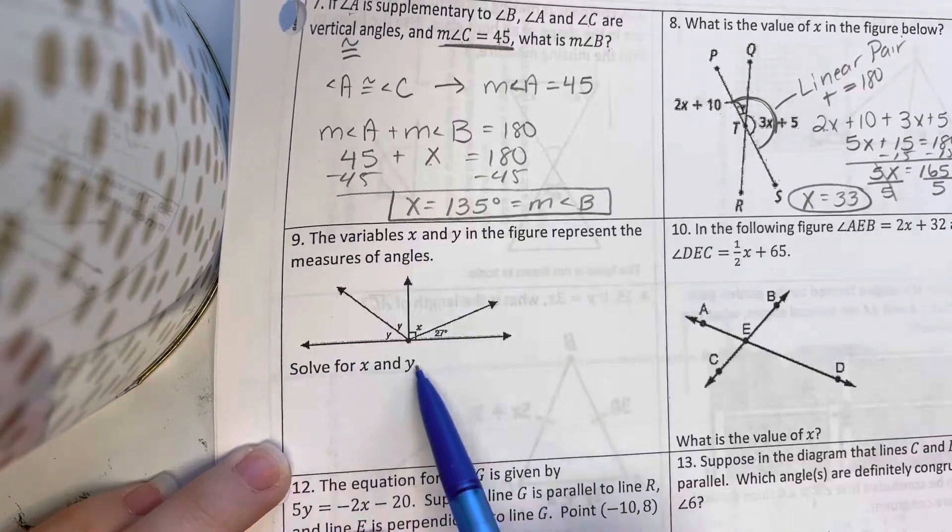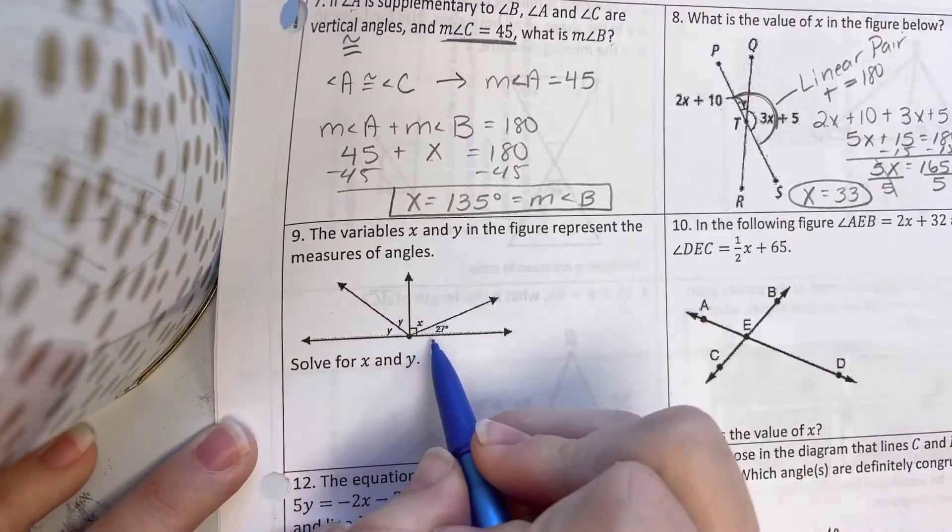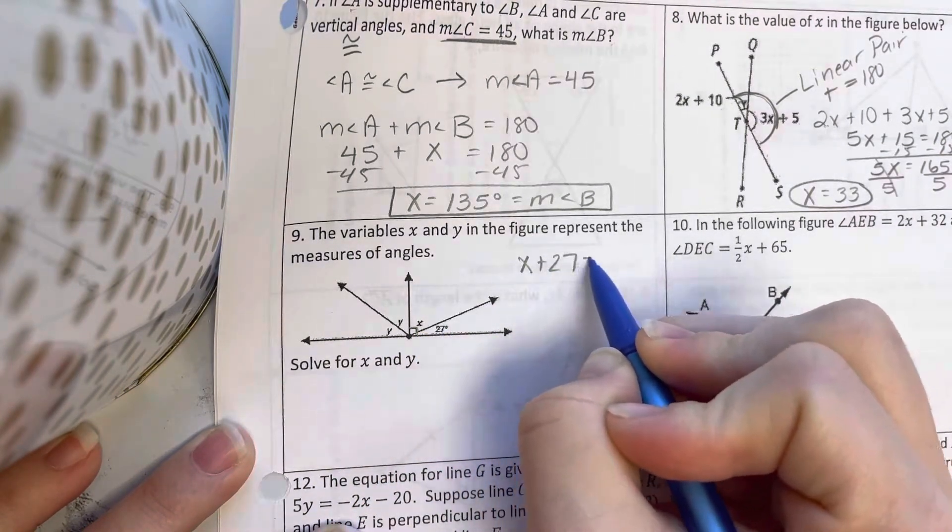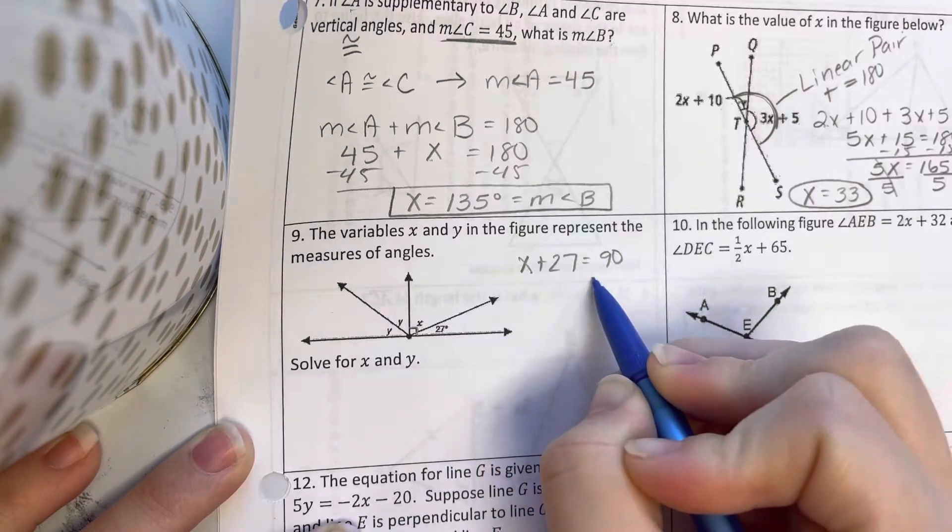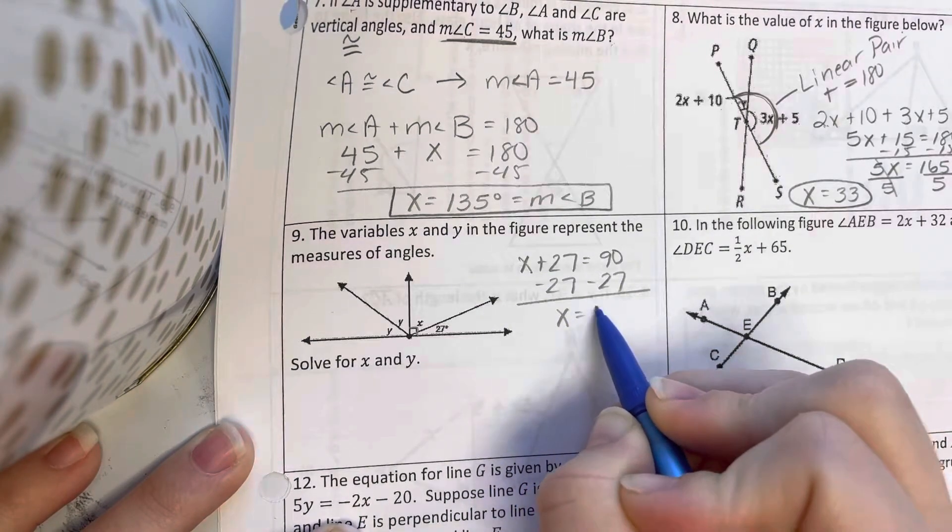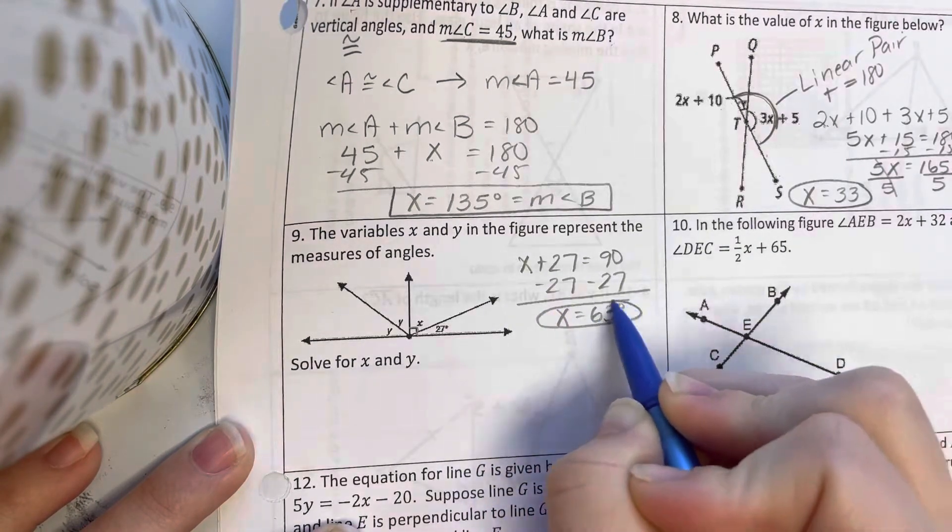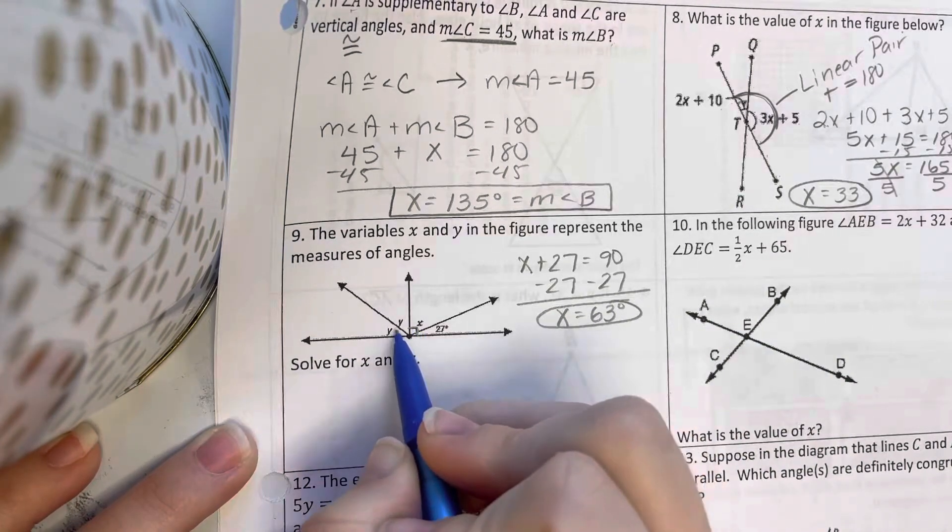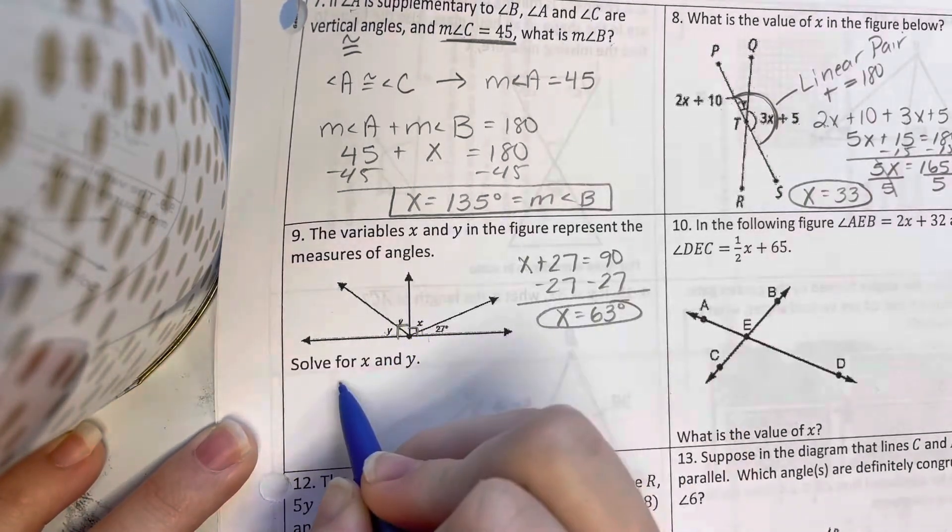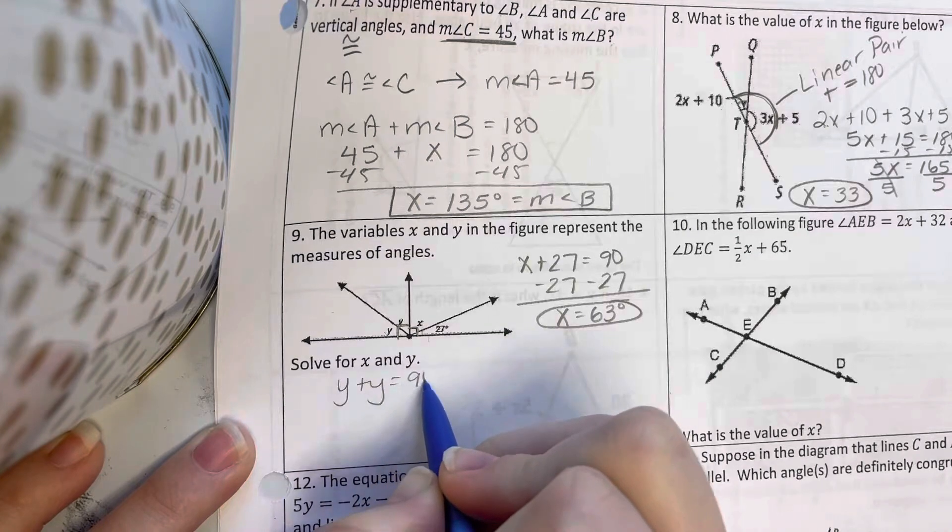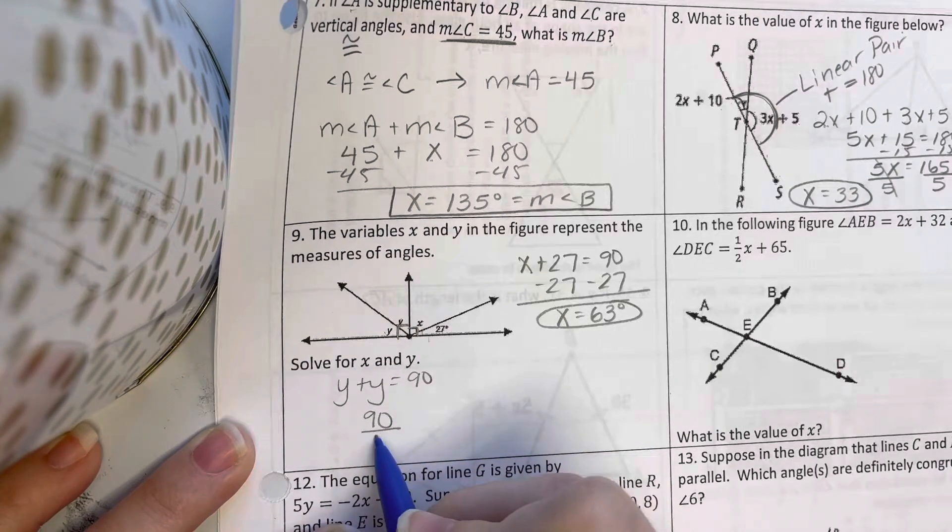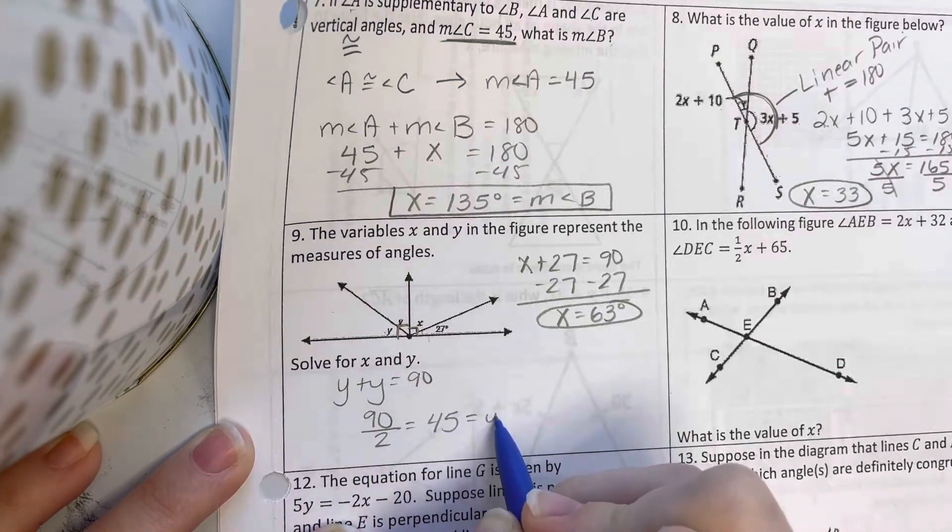Find X and Y here given this diagram. All right, so I see that this is a right angle here. And if this is 27, X plus 27 should equal 90. So I'm going to subtract 27. And that's going to give me X equals 63 degrees. Then if this whole thing is 90, so is this, because together this is a full line, 180. So Y plus Y equals 90. That means that they're going to be the same. So I'm going to take 90 divided by 2 to get 45 for Y.